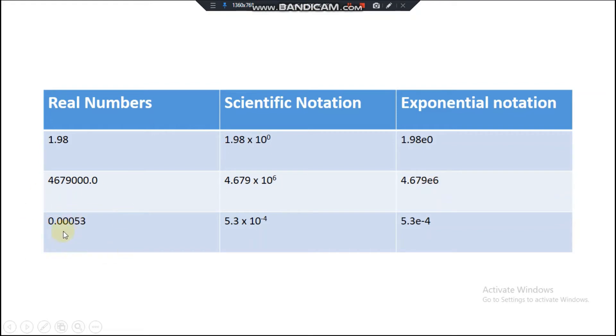Now the real number is 0.00053. To represent this value, when the decimal point moves to the right, you have to move the point to the 5's place. In between there are four numbers, so the power becomes minus 4 in scientific notation. In exponential notation, we write e and then the value minus 4.